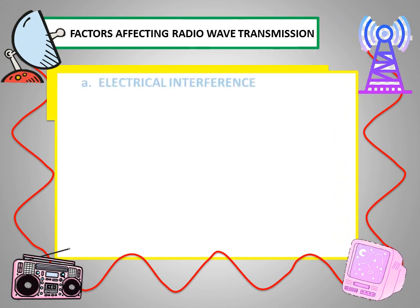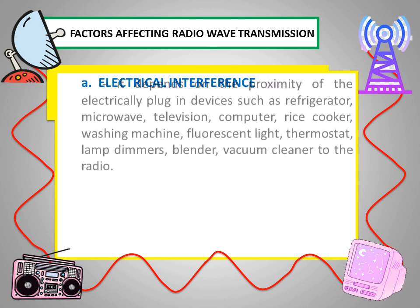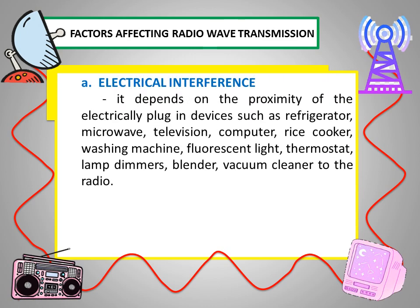One is electrical interference, which depends on the proximity of electrically plugged-in devices such as refrigerators, microwaves, televisions, computers, rice cookers, washing machines, fluorescent lights, thermostats, lamp dimmers, blenders, and vacuum cleaners near the radio.